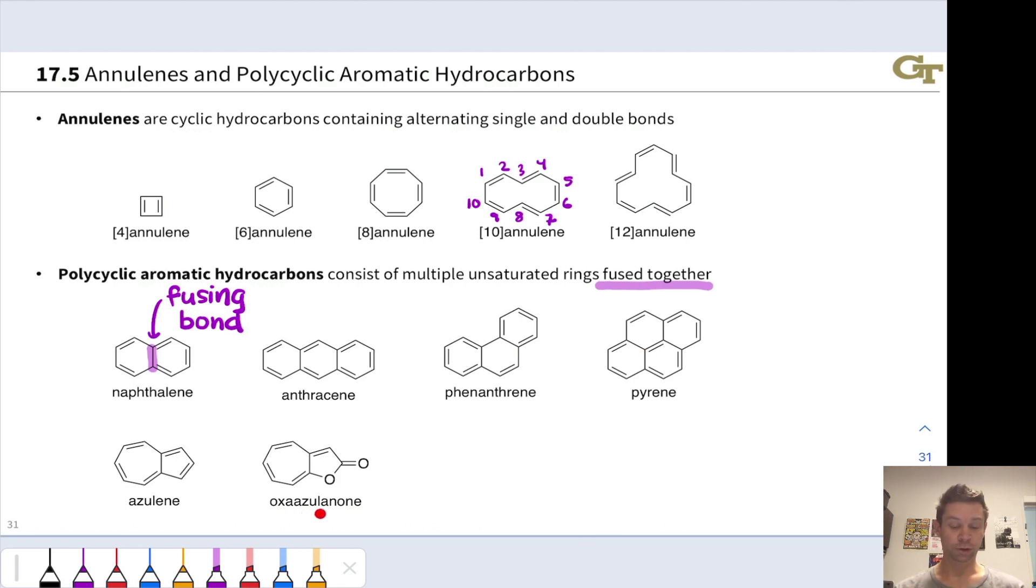Azulene and oxaazulinone here are what are known as non-benzenoid aromatic compounds because they don't contain benzene rings. All of these top four structures contain benzene rings within the structures. Azulene has a seven-membered and a five-membered ring and is a really interesting compound that actually exhibits polarization. Oxaazulinone is technically a heterocycle, but it may not appear aromatic. After all, if we just count the pi bonds, we've got 2, 4, 6, 8 electrons. This kind of looks anti-aromatic.